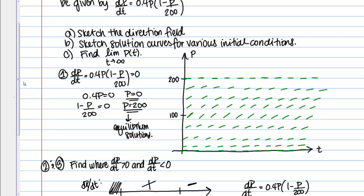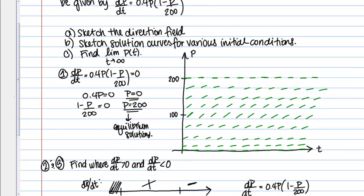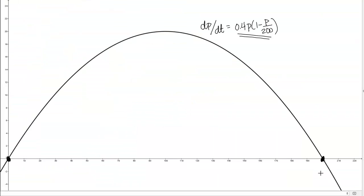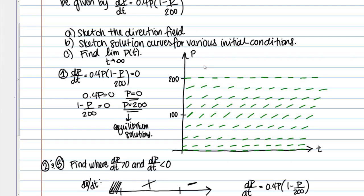Now let's think about what's happening for p values greater than 200. We know that our slope should be negative, so going back to the graph for more detail: here's 200, and for p values greater than 200 it's indeed negative, and basically it's just going to get more and more negative — larger and larger values in the negative direction. So on my direction field, as I get above 200, my slope should be steeper and steeper in the negative direction. Maybe I start out with just a barely negative slope, but then those get steeper and steeper as p increases. These should be the same slopes along any given horizontal line since this is independent of t.